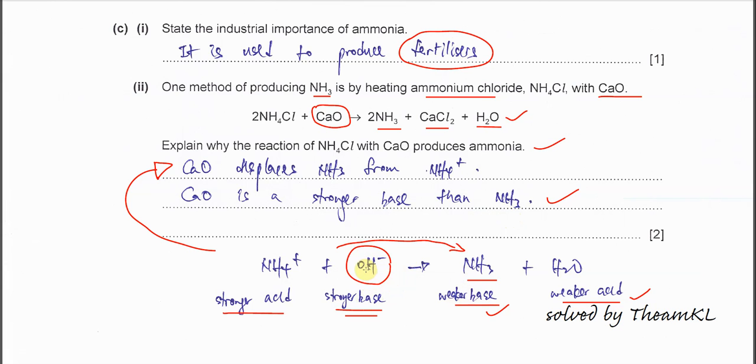That's why when hydroxide reacts with ammonium it can form ammonia. Because hydroxide is a stronger base which reacts with stronger acid to form the weaker base and H2O. So this reaction shows that calcium oxide is actually a stronger base than ammonia which will react with the ammonium and form this weaker base.